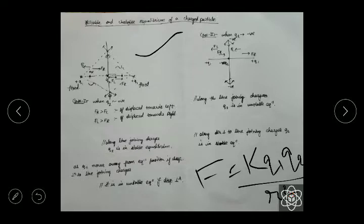The force from the left side will be towards the right, which is the bigger force. So FR will be greater than FL because the distance is less. Along the line joining the charges, Q2 is in stable equilibrium as Q2 moves away from equilibrium position.